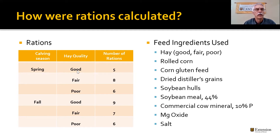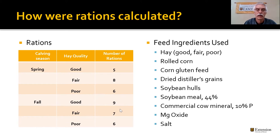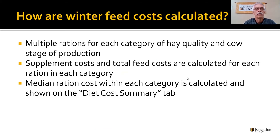For spring calving cows with good quality hay, I put together five different rations using these ingredients in different blends. For fair quality hay, eight different rations, and six rations were developed for the poor quality hay. For fall calvers, good quality hay had nine rations, again utilizing the same ingredients in different proportions and combinations. Seven rations for the fair quality hay and six for the poor quality hay.